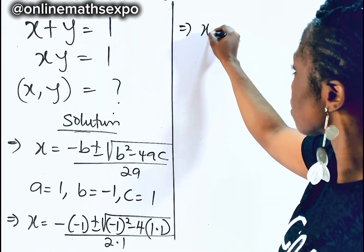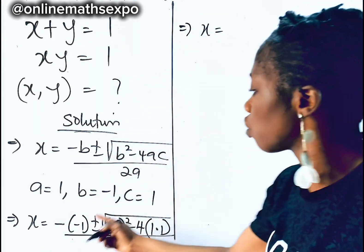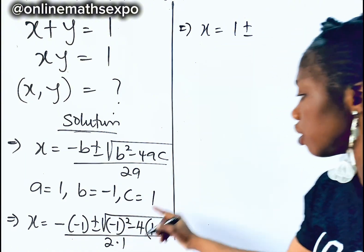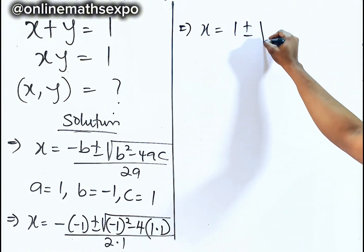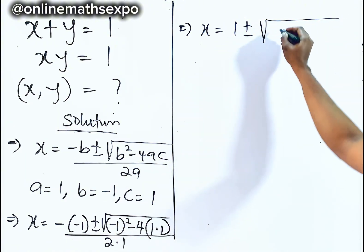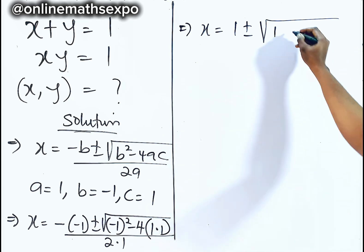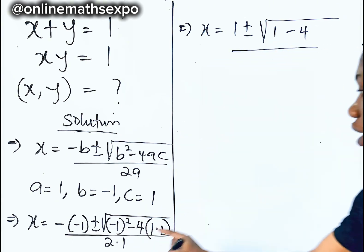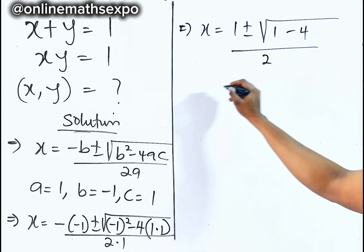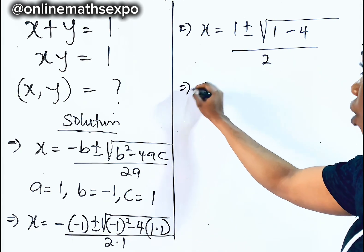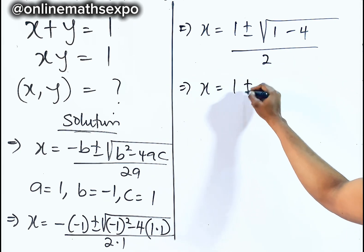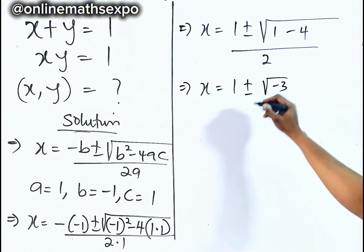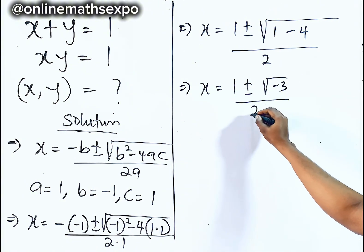Keep solving: x equals, multiplying this gives positive 1, plus or minus the square root of 1. Multiplying 4 times 1 times 1 gives negative 4, divided by 2. So we have x equals 1 plus or minus the square root of 1 minus 4, which is the square root of negative 3, divided by 2.